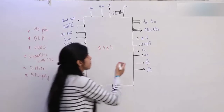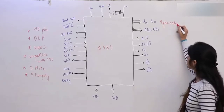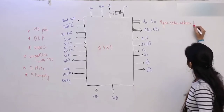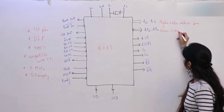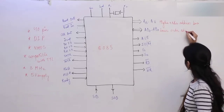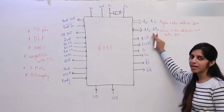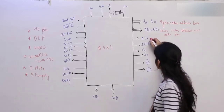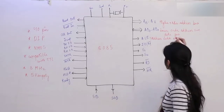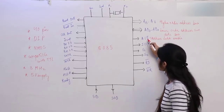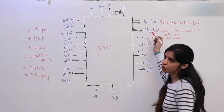A15 to A8 are the higher-order address bus — these 8 pins represent the higher-order address bus. AD7 to AD0 is the lower-order multiplexed address/data bus. This is a multiplexed bus that acts as address bus as well as data bus. ALE — Address Latch Enable — controls this: if ALE is 1 it is used as address bus only; if ALE is 0 it is used as data bus only.